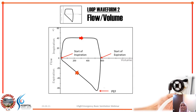Finally, let's look at our last waveform: the flow-volume curve. This is a normal shape — inspiration starts at the top, this is the inspiratory part, and then expiration begins as you breathe out into the ventilator, returning to baseline to start another cycle. The flow-volume loops used for ventilator graphics are the same as those used for pulmonary function testing in spirometry, only upside down.